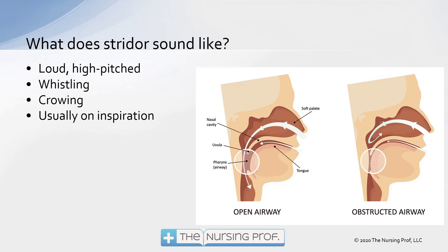Stridor is a loud, high-pitched, whistling, crowing sound, typically worse on inspiration. Inspiration is active — we're pulling air in faster — compared to the longer, more passive expiratory phase, which produces less sound energy. So listen for a high-pitched, loud, whistling sound on inspiration. That's your stridor.